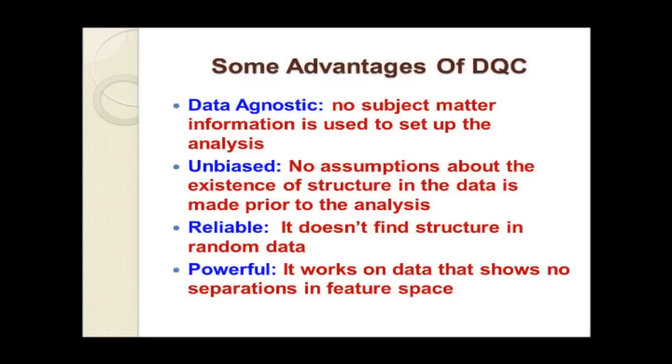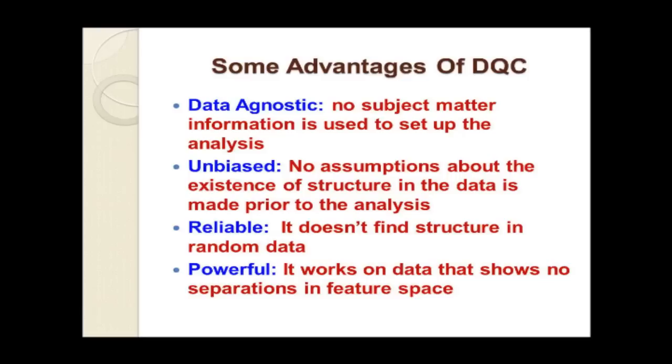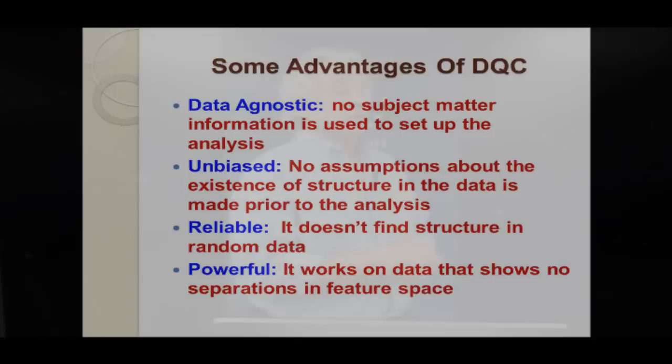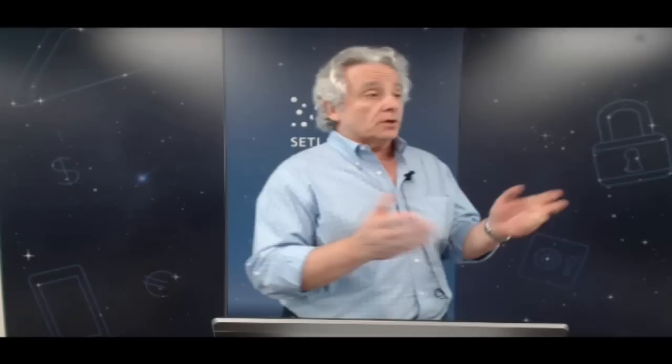The principal advantages: no subject matter information is used in the DQC analysis — we couldn't care less where the data comes from. Unbiased here really means unlike k-means, c-means, support vector machine algorithms, or even machine learning algorithms, where you start out assuming there's something in the data and assume how many things are there, and then try to find those things. Most algorithms — divisive, agglomerative, c-means, k-means — they all put in a number for how many clusters to find. We don't put any such number in. We're perfectly happy to find nothing; if we find nothing, we tell you you've got lousy data.